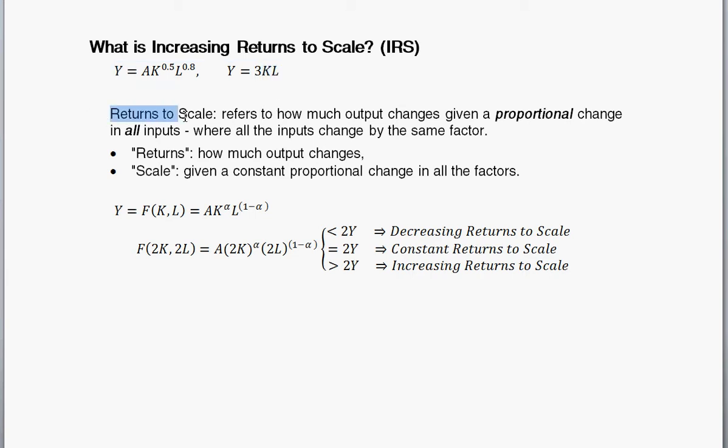Returns to scale is, how much does this output change given all the inputs? So K and L in these examples are all increased by the same amount. By returns, we're talking about how much does output change. And by scale, given a constant proportional change in all those factors.